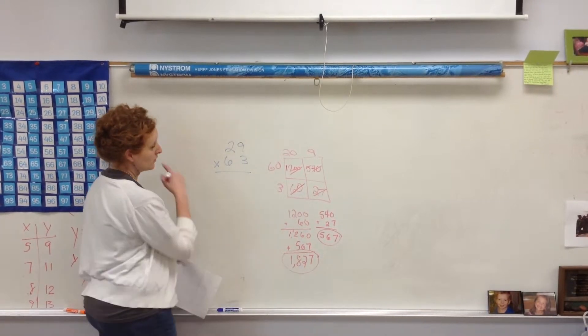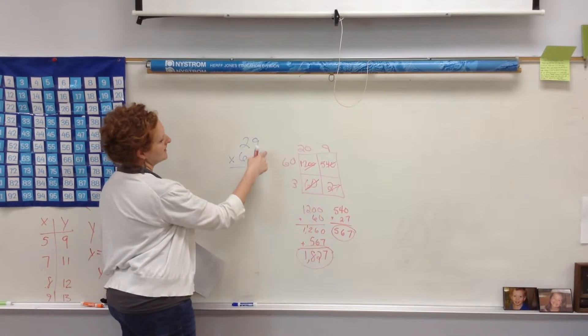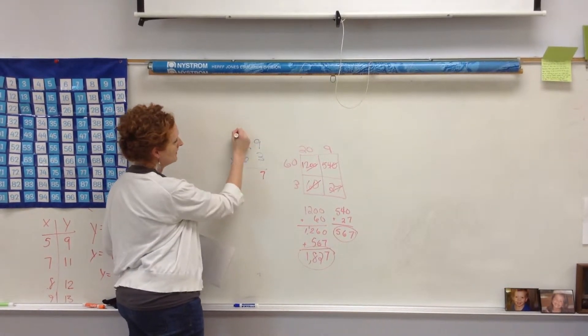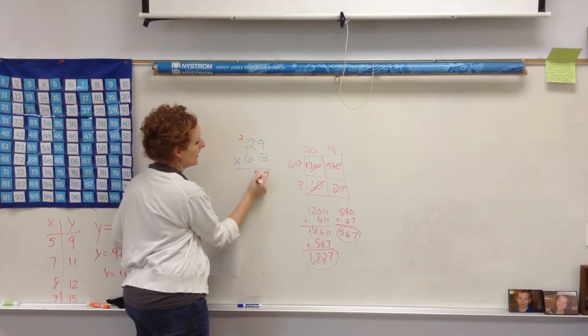Now, the other way that they've learned is the traditional algorithm which was the way we learned in school. So, 3 times 9 is 27. 3 times 2 is 6 plus 2 more, 8.